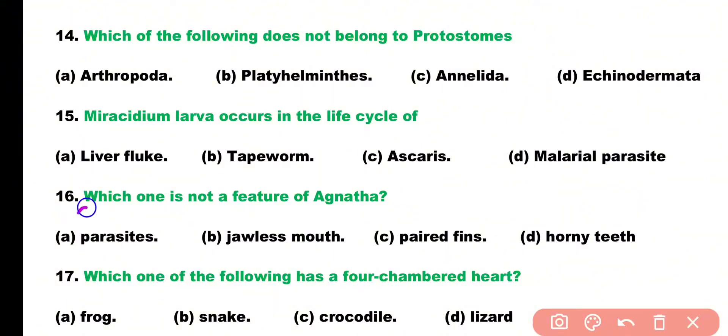Question number 16. Which one is not a feature of Agnathans? Parasites, jawless mouth, paired fins, or horny teeth? Correct answer is Option C. Paired fins are absent in Agnathans.